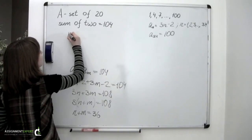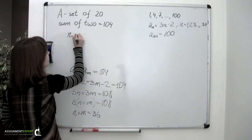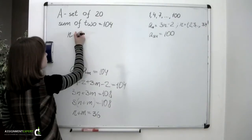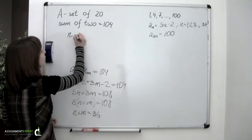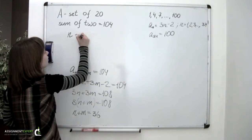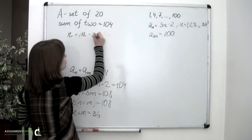So, this is our new condition. We have to prove that there are 2 numbers, 2 distinct numbers in the set A, numbers n and m, and their sum would be 104, and the sum of their indices would be equal to 36.